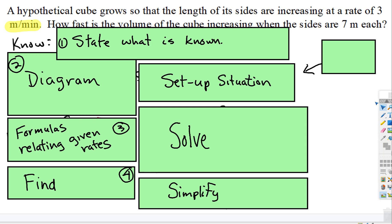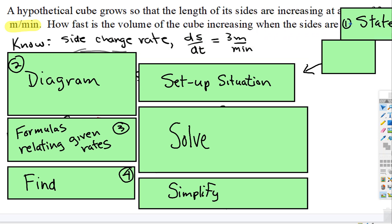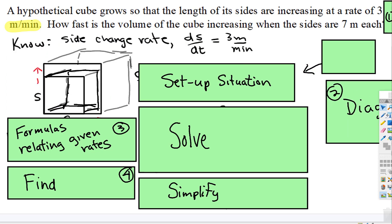We're going to state what we know. The side rate is changing at three meters per minute. The diagram of the cube growing would maybe look something like this. In fact, the cube in all directions is changing, right, because the volume is increasing.